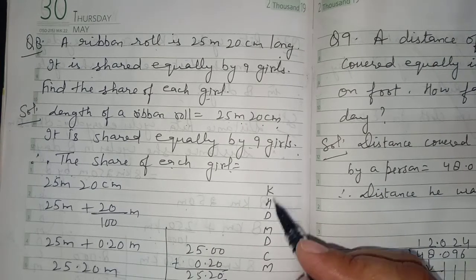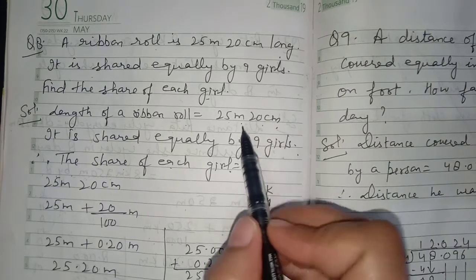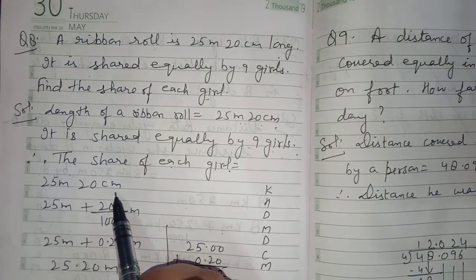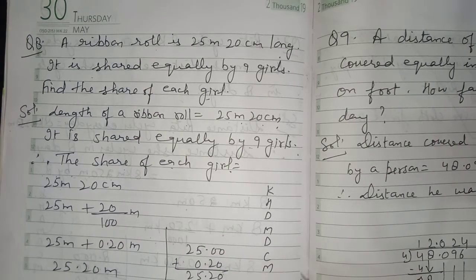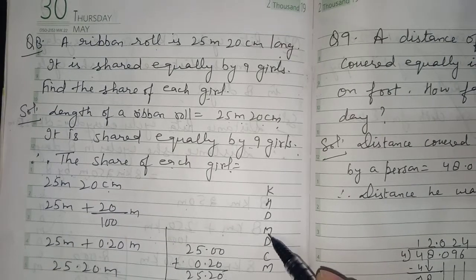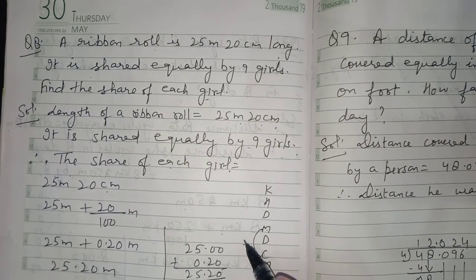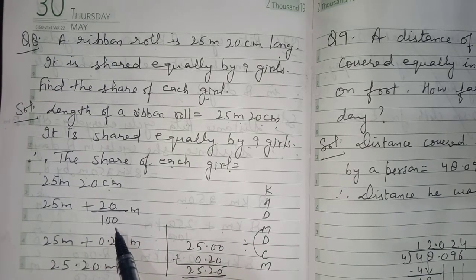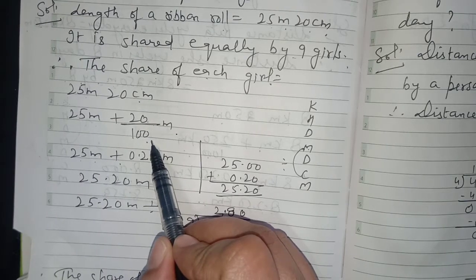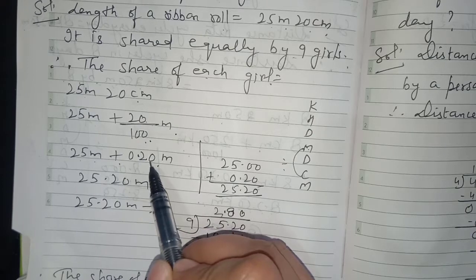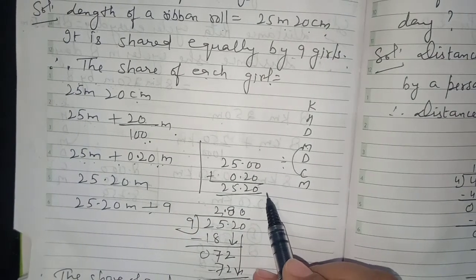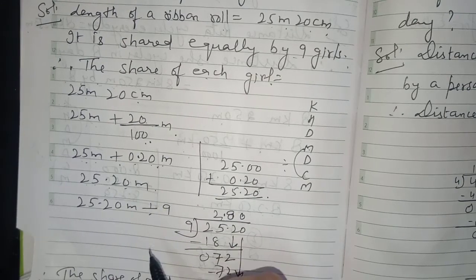We convert 25 meter 20 centimeter into meters. Using the formula: centimeter to meter is two steps upward, so divide by 100. So 25 meter + 20 ÷ 100 meter. Dividing by 100, write the numerator and put the decimal two digits from the right: 0.20 meter. Adding: 25 + 0.20 = 25.20 meter.